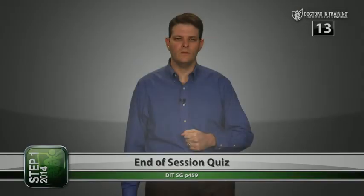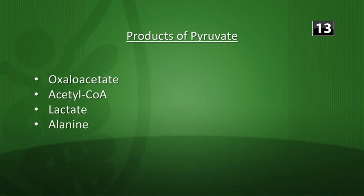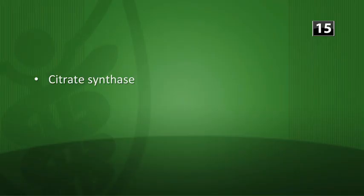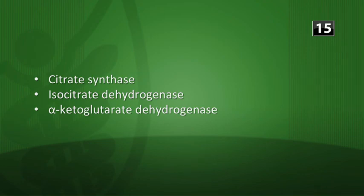End of session quiz. First question: what are the possible products of pyruvate? Four products — oxaloacetate, acetyl-CoA, lactate, and alanine. Next, what are the two main nitrogen transporters in the blood? Alanine and glutamine. Next, what are the major regulatory enzymes of the TCA cycle? Citrate synthase is the first step; isocitrate dehydrogenase is the rate-limiting step; and alpha-ketoglutarate dehydrogenase is the heavily regulated step requiring all those cofactors.